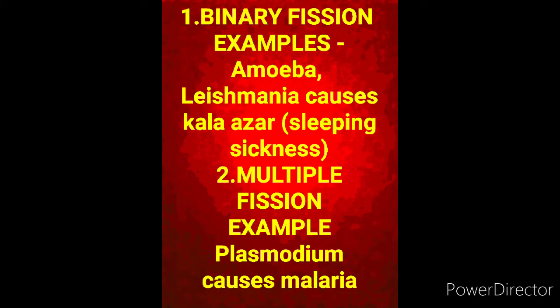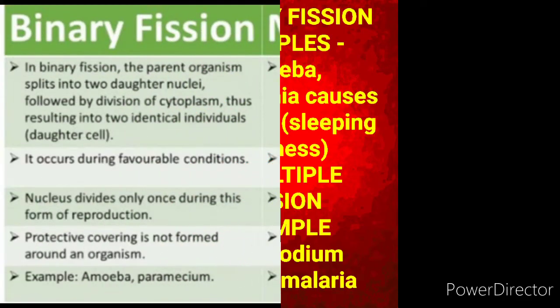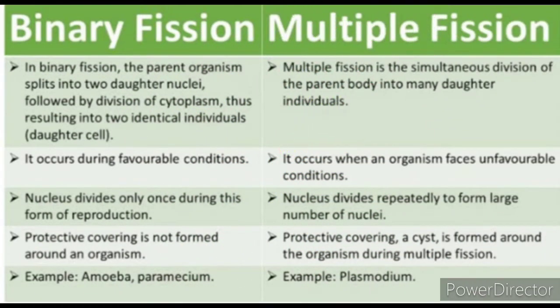As you know the differences between the asexual and sexual mode of reproduction — in the asexual mode, a single parent is involved, whereas in the sexual mode, both male and female parents are involved. In binary fission, the parent divides into two daughter cells — 'bi' means two, 'fission' means breaking. When a single parent divides into many daughter cells, it is called multiple fission, as 'multiple' means many.